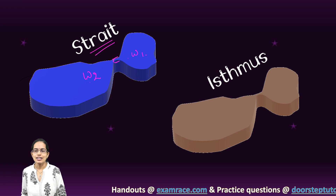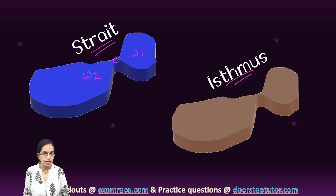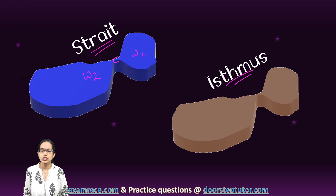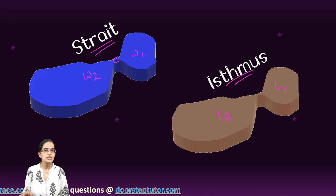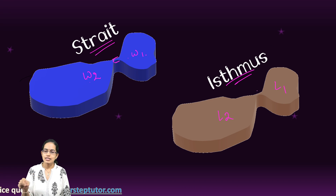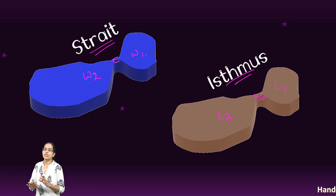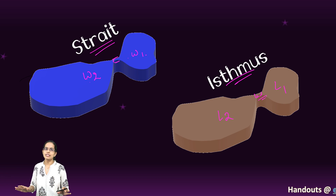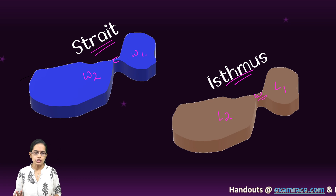On the other hand, an isthmus is simply a land parcel which connects two land masses. A connection of land between two land masses is what is an isthmus. That's a very simple understanding of the two concepts.